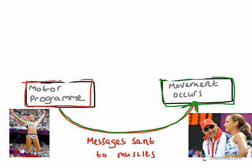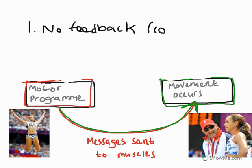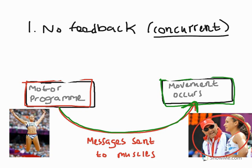So what do we get marks for when describing this process? First of all, we get marks for saying no feedback. We can be more specific and say no concurrent feedback — that is, feedback during the performance. Because there's no concurrent feedback, Ennis in our image makes up for that by getting feedback from her coach between the jumps, and we would call this terminal feedback. She can't actually judge her own knowledge of performance during the movement because it's too rapid, so she asks her coach to provide feedback.